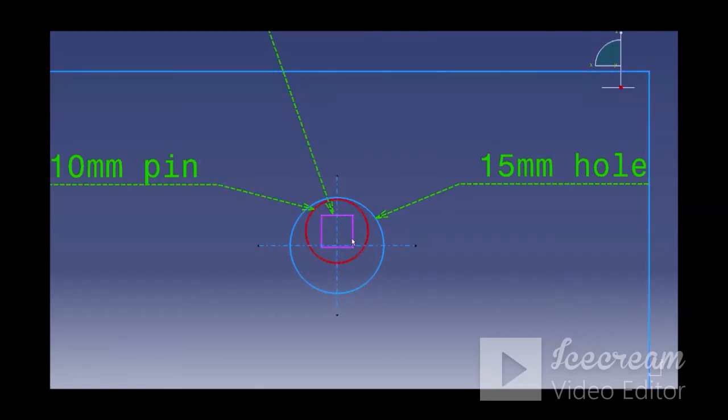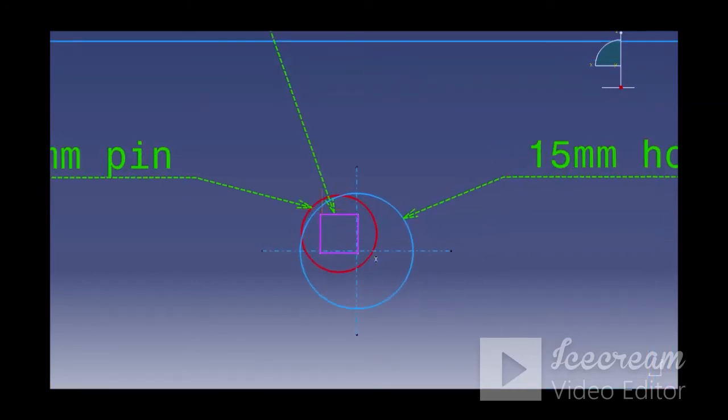But what happens when this hole is 2.5 off into the y-direction and at the same time it is off by 2.5 into the x-direction. Now you see that although the center is lying within the tolerance we defined, it is not clearing the pin here.